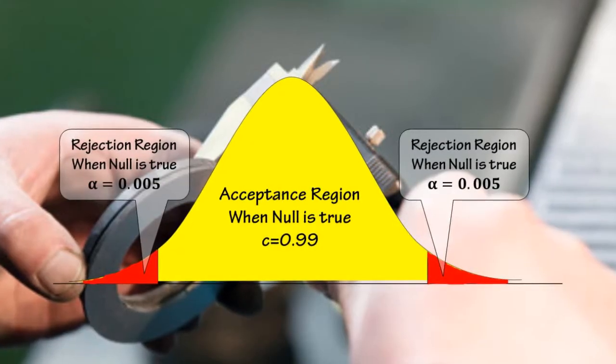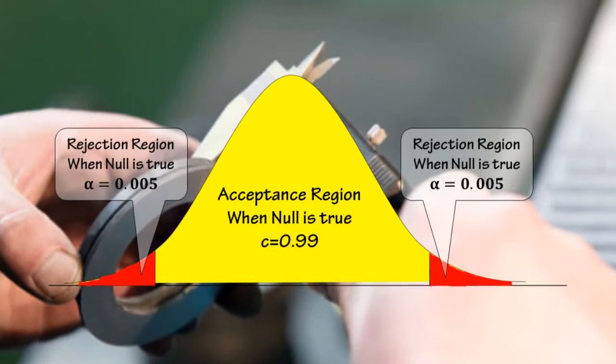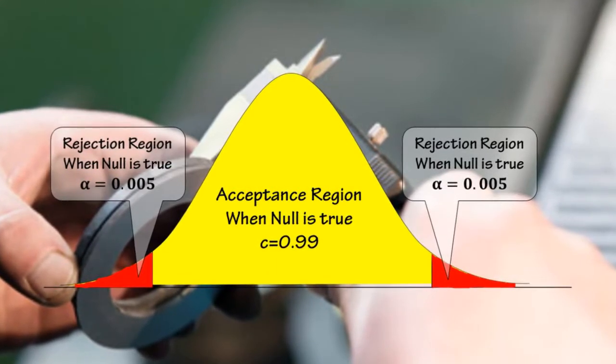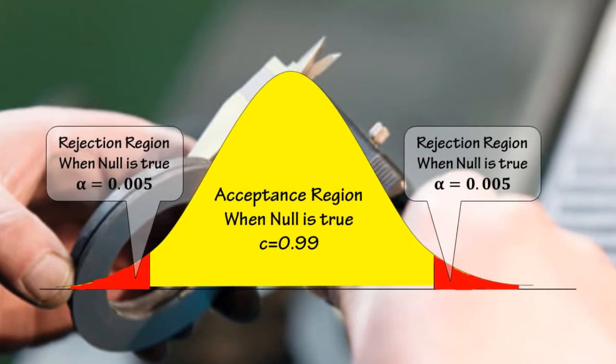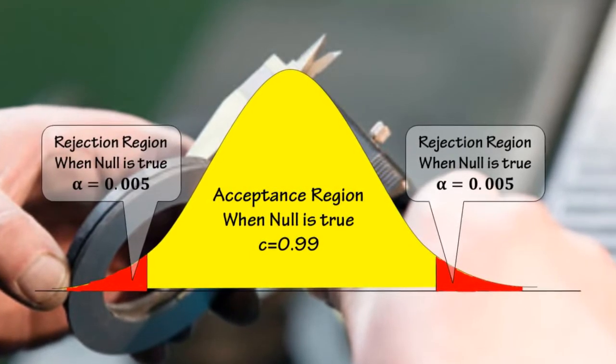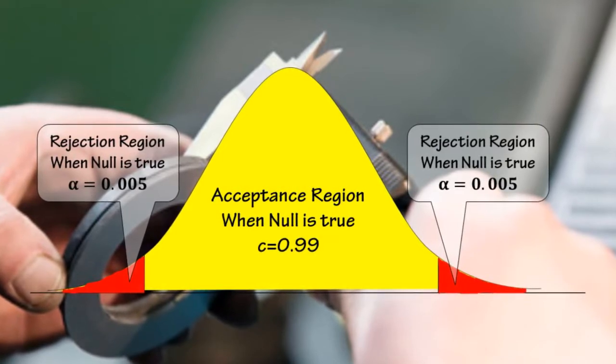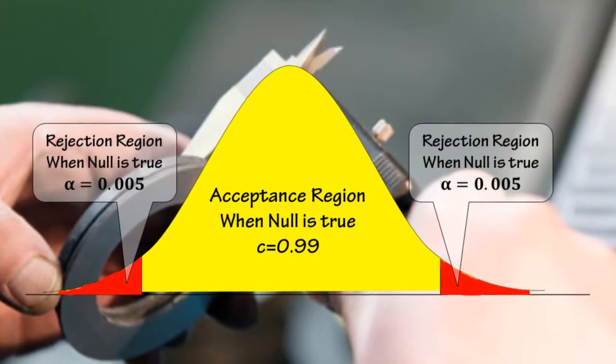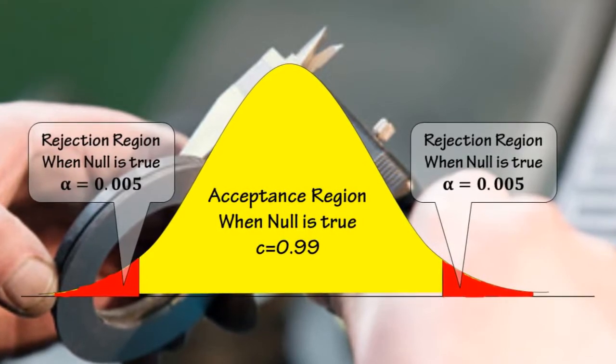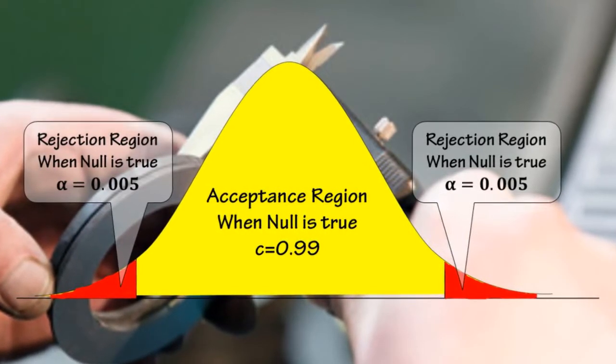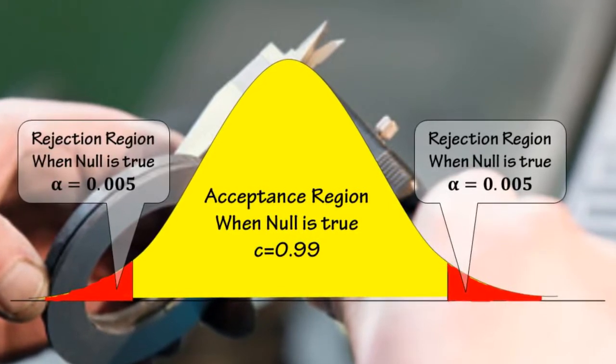Now let's understand the acceptance region and rejection region under the normal curve. For the 99% confidence level, c equals 0.99, shown in yellow — this is the acceptance region under the normal curve where the null hypothesis is acceptable. The significance level alpha equals 1 minus c, which is 0.01, shown in red on the left and right tails of the curve. These are the rejection regions, where the null hypothesis is rejected even if the null is true.